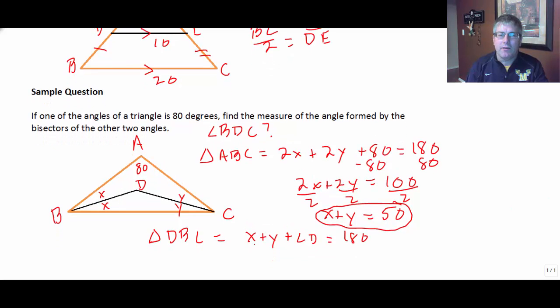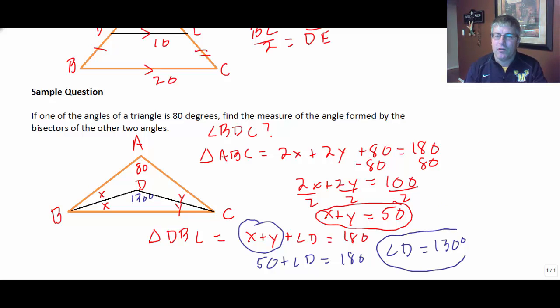So if X plus Y is 50, I can replace X plus Y, 50 plus angle D equals 180. It's a quick subtraction. Tells us that angle D must be 130 degrees. So we have answered our question. We found the measure of angle D. It is 130 degrees. So a good sample problem using the properties that we have learned here in this particular section. And we'll do a little more practice with this when I see you in class.